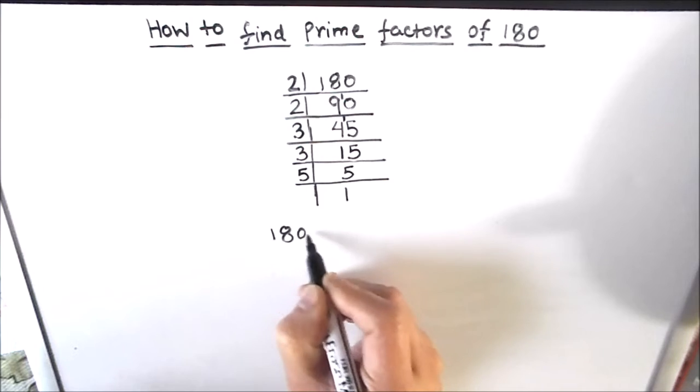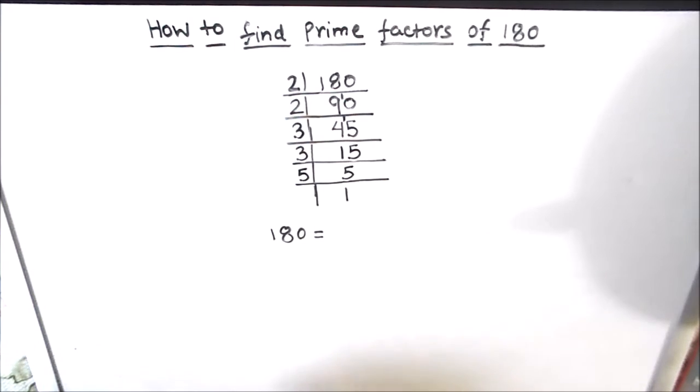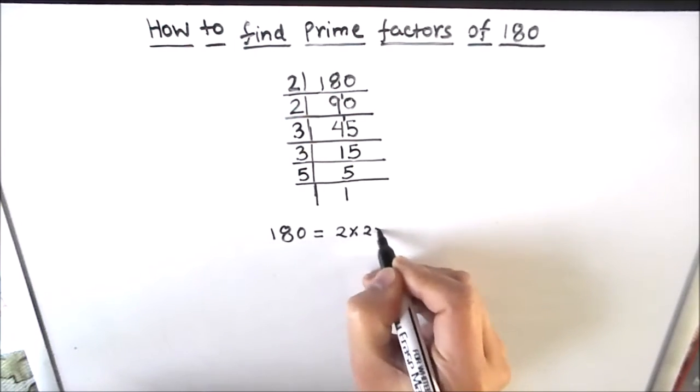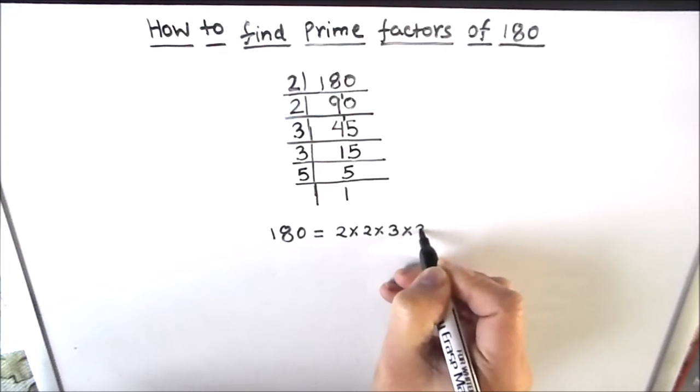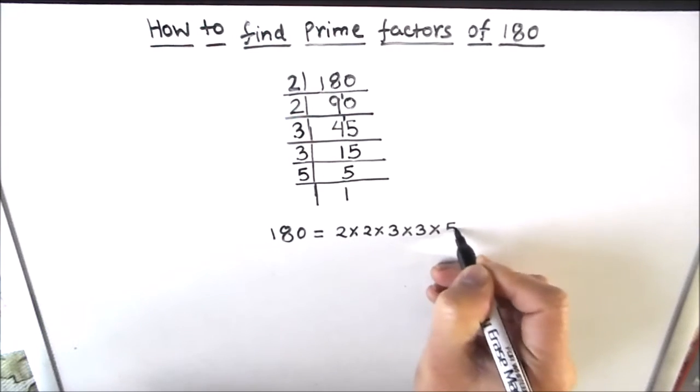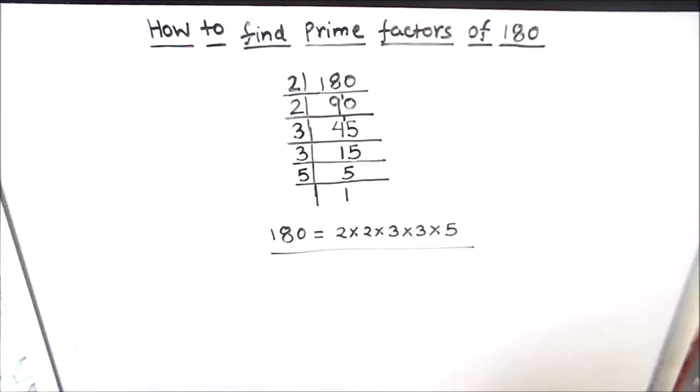So the prime factors of 180 are all the numbers which are on the left hand side. So 2 times 2 times 3 times 3 times 5 are the prime factors of 180. So this is how we find the prime factors of any number using prime factorization method.